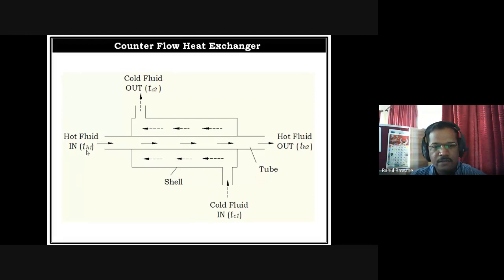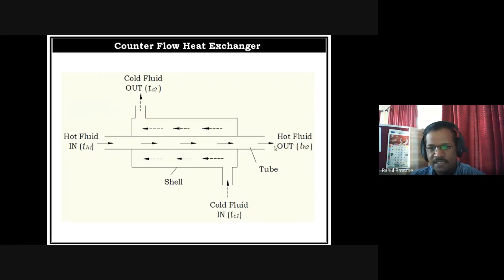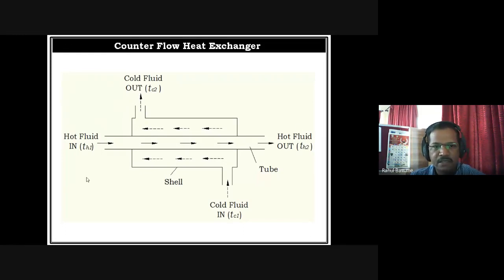Hot fluid entering is noted as TH1 (hot fluid entry), and hot fluid exit is TH2. Similarly for cold fluid, TC1 is the inlet and TC2 is the outlet. The hot fluid enters at higher temperature, delivers heat to the surrounding cold fluid, and its temperature decreases. The cold fluid enters at the lowest temperature, gains heat, becomes warmer, and moves out. The highest temperature in the exchanger is the hot fluid entry temperature and the lowest is the cold fluid entry temperature.